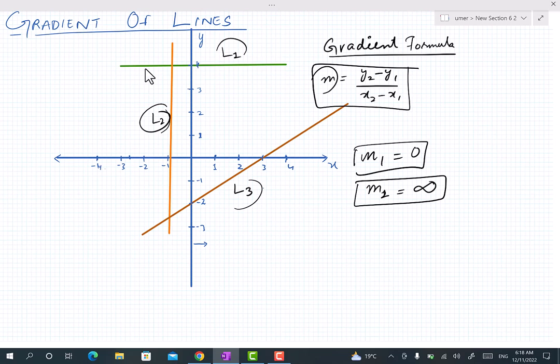For line L3, we will mark two definite points on the line. If the line is passing through two axes, then it is feasible to use those two points that are on the axes.